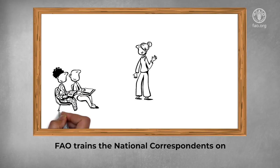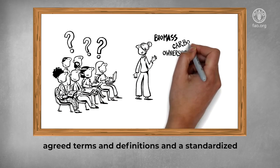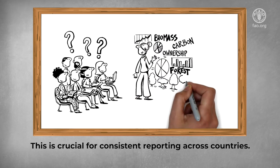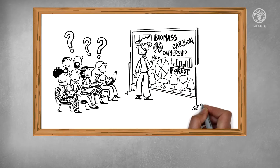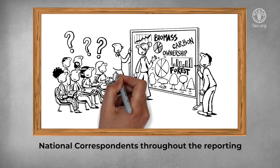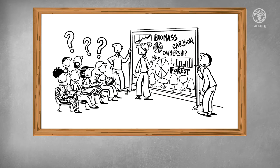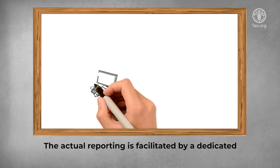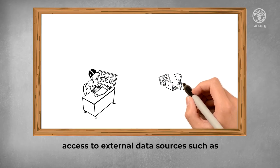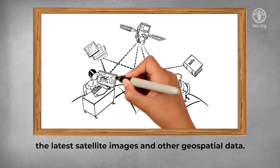FAO trains the national correspondents on how to compile country reports using commonly agreed terms and definitions and a standardized reporting methodology. This is crucial for consistent reporting across countries. Moreover, designated FAO experts support the national correspondents throughout the reporting process and help them to solve any issues. The actual reporting is facilitated by a dedicated online platform, which also gives the national correspondents access to external data sources, such as the latest satellite images and other geospatial data.